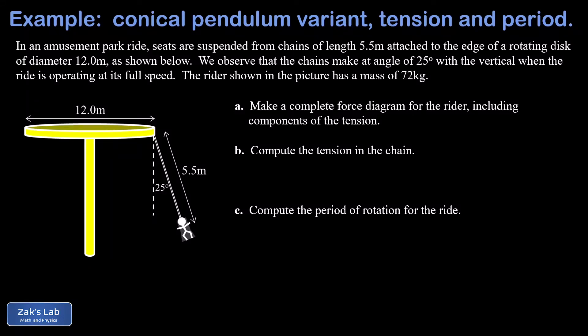In this video we're solving a conical pendulum variant, sometimes called giant swing problems. The idea is that we have a carnival ride consisting of a giant rotating disc at the top. We're told the diameter of this is 12 meters. Along the edges of the disc we have chains attached, and there are swings on the end of those for people to ride in.